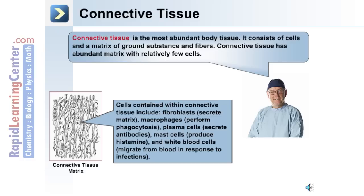Here's an example of a connective tissue matrix. Cells contained within this tissue include fibroblasts, which function by secreting matrix; macrophages, which perform phagocytosis; plasma cells, which secrete antibodies; mast cells, which degranulate and produce and release histamine; and white blood cells, which migrate from blood in response to infections in the area.